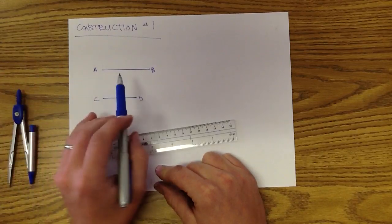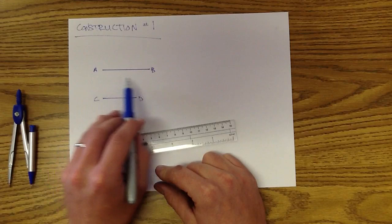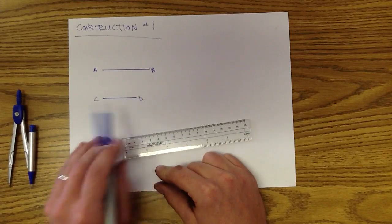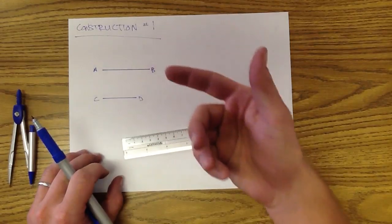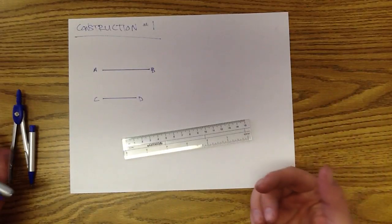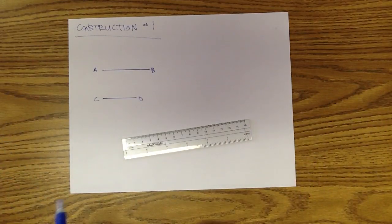So construction one deals with line segments. We have a line segment AB here, and we also have a line segment CD. As you can tell, or hopefully should be able to tell, both of these segments are two different lengths.